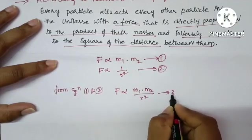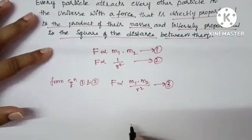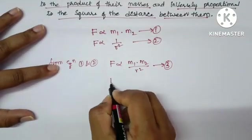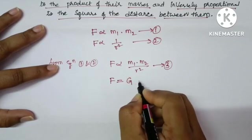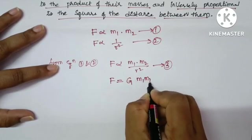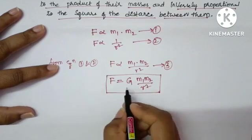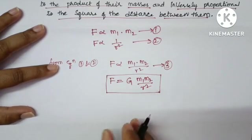Now remove the proportionality by keeping the proportionality constant. In this case, force is G m1 m2 upon r square. This is the formula for gravitational force.